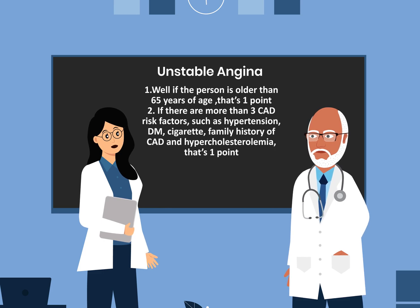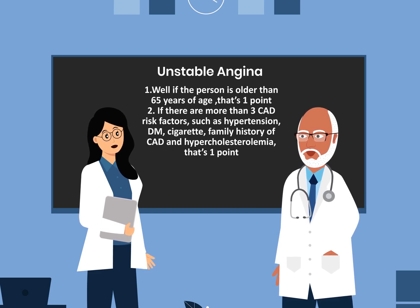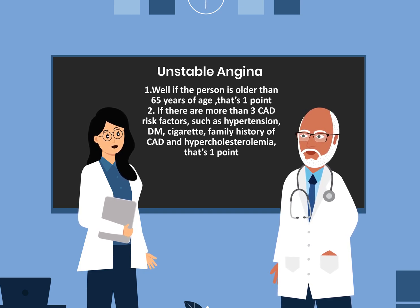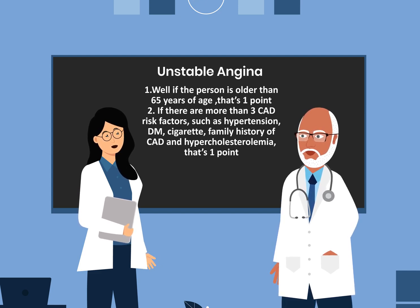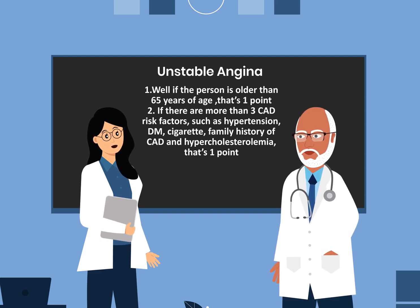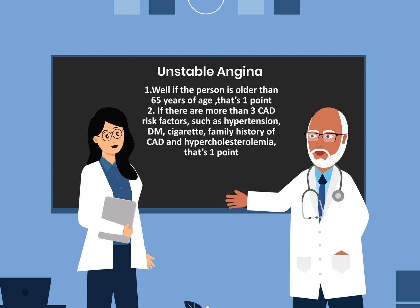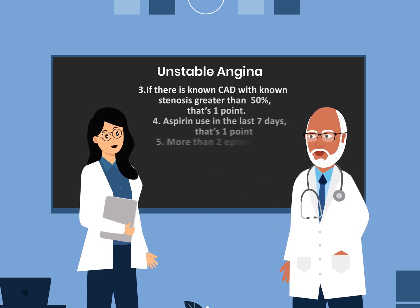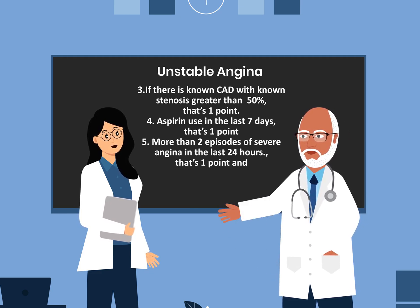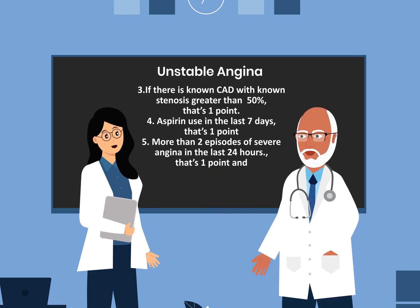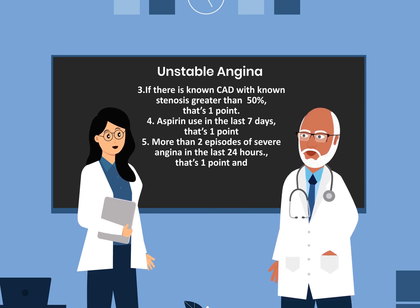How do you use the TIMI score to stratify cardiac chest pain? If the person is older than 65 years of age, that's one point. If there are more than three coronary artery disease risk factors such as hypertension, diabetes, cigarette smoking, family history of coronary artery disease, and hypercholesterolemia, that's one point. If there is known coronary artery disease with known stenosis greater than 50%, that's one point. Aspirin use in the last seven days, that's one point.